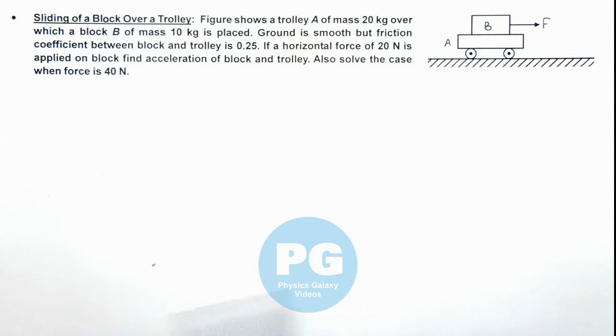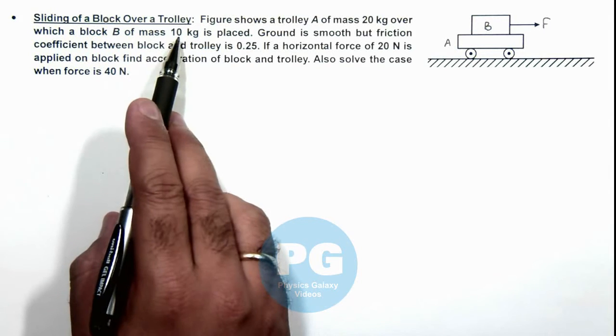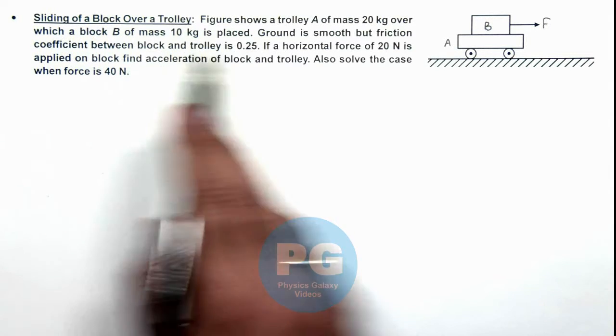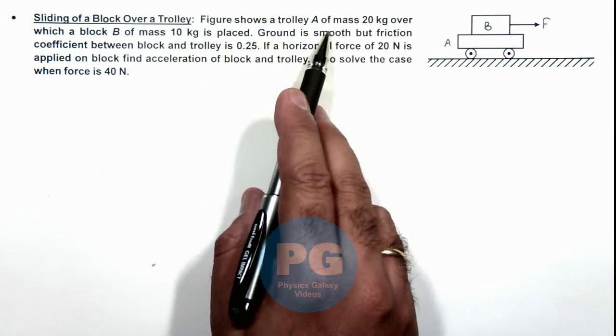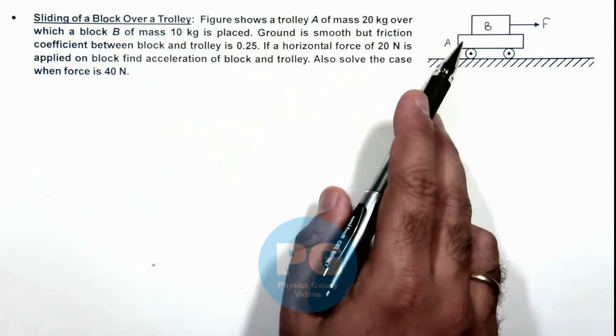This illustration describes the analysis of sliding of a block over a trolley. Here we are given that figure shows a trolley A of mass 20 kg over which a block B of mass 10 kg is placed.